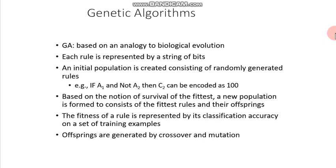You may have seen Darwin's theory — survival of the fittest. The one who is fit will survive longer. There is an initial population, and we find out who is fitter than others, select them, and they generate new offspring or a new generation. The fitness of a rule is represented by its classification accuracy. You can use an error formula like mean absolute error — if the error is lower, that chromosome is considered fit. There is a comparison of error accuracy.